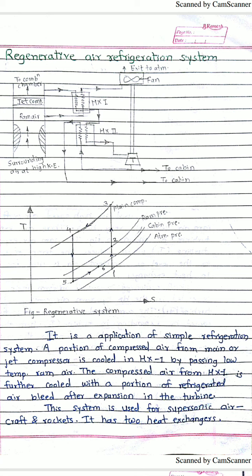The ambient air passes through the convergent section, where its velocity increases and kinetic energy increases. This high-velocity, high-kinetic-energy air is called ram air. A portion of that ram air is passed to the jet compressor, and the remaining portion is taken for the heat exchanger. The air that enters the compressor undergoes compression, producing high-pressure, high-temperature air.